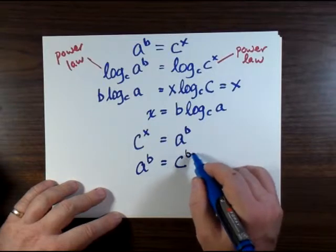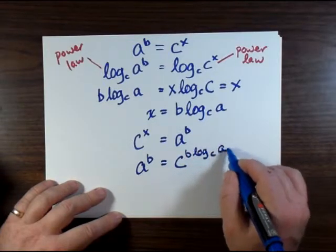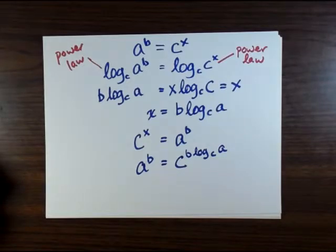Well, this works out to b log base c of a, and that's equal to x. And we can rewrite the last expression by substituting x for b log base c of a as an exponent of c.